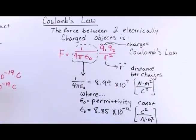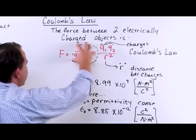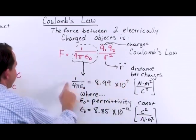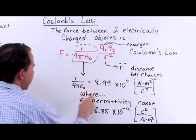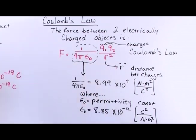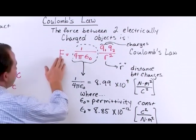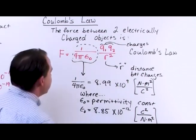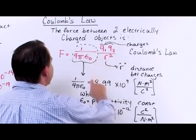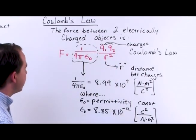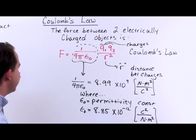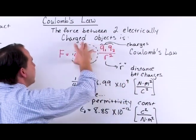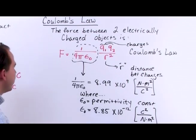When you're calculating the force between objects, you have two options: you can just use the number 8.99 times 10 to the 9, because the book has already pre-calculated what this is, or you can leave it like this and plug in for the permittivity. You're going to get exactly the same answer. The force between two objects that have charge depends only on the charge of the individual objects multiplied together, divided by the distance squared between them.